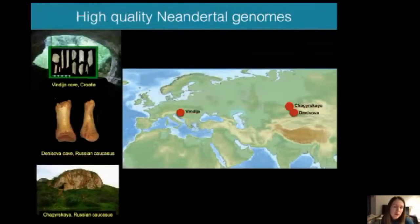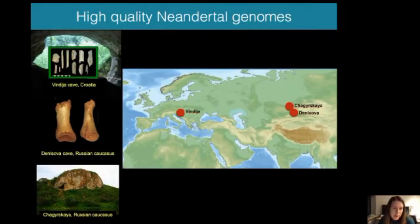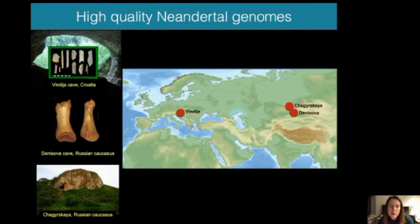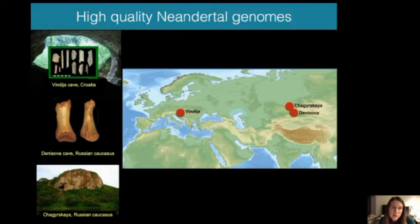Over the last 10 years or so, we've used these approaches to sequence to high coverage the genomes of three Neanderthals: a Neanderthal from Vindija cave in Croatia and two Neanderthals from different caves in the Altai Mountains in Russia. These three genomes have been sequenced to between 30 and 50-fold coverage in short reads. For the non-repetitive parts of the genome mappable with short reads, these genome sequences are of a quality similar to modern genomes. We can run genotyping and do all sorts of analyses of haplotype lengths and similar things.